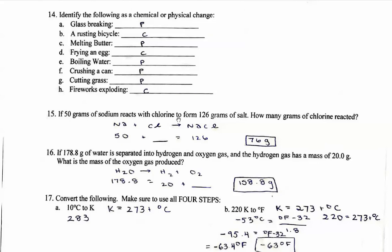If you're breaking glass, you're not changing the identity of the compound, so therefore it's physical. Rusting is definitely chemical - you're changing the identity. Melting butter, it's still butter, just in liquid form, so it's physical. Frying an egg, you're actually changing the identity because you can't get the original raw egg back, so it's chemical.